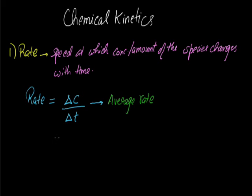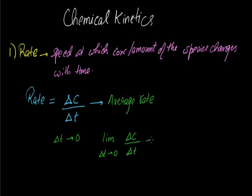Now, if delta t tends to 0, that is we are taking an infinitely small time interval, then the limit as delta t tends to 0 of delta C by delta t is equal to dC by dt. This is known as instantaneous rate.